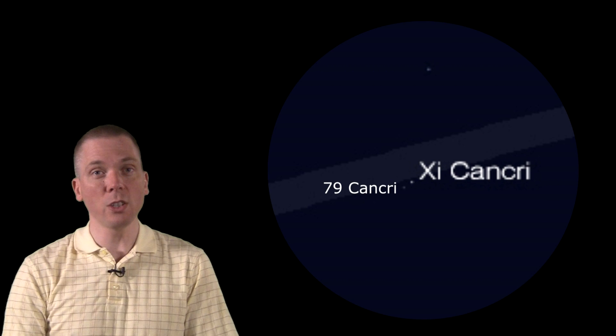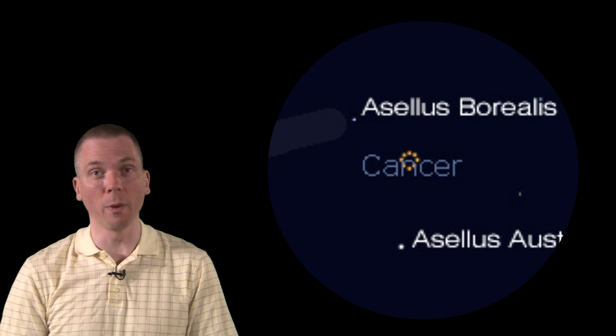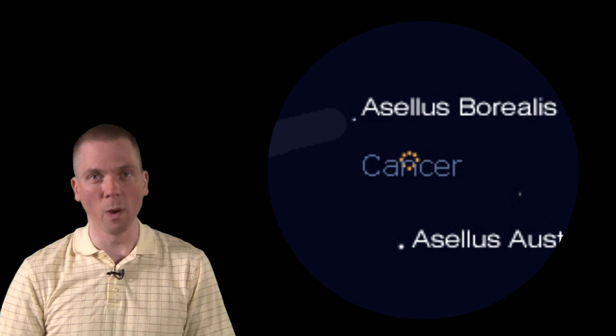Now continue until you see two 4th magnitude stars. The northern one, Acellus Borealis, is 4.7 magnitude and fainter. The southern one, Acellus Australis, is brighter at magnitude 4.0, similar to what Alturf was.